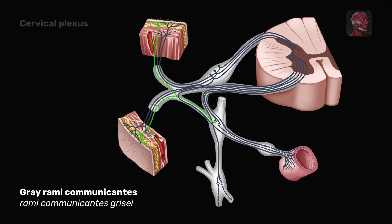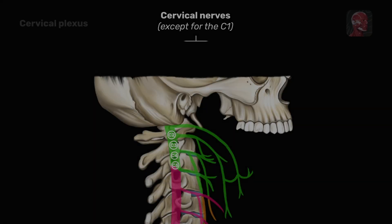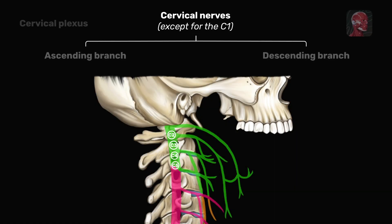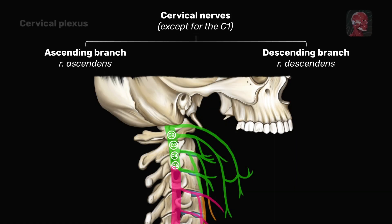Each of the cervical nerves, except for the first one, C1, splits into two branches: ascending and descending. They subsequently connect with the branches of adjacent cervical nerves, forming loops. These loops contribute to the formation of the cervical plexus.